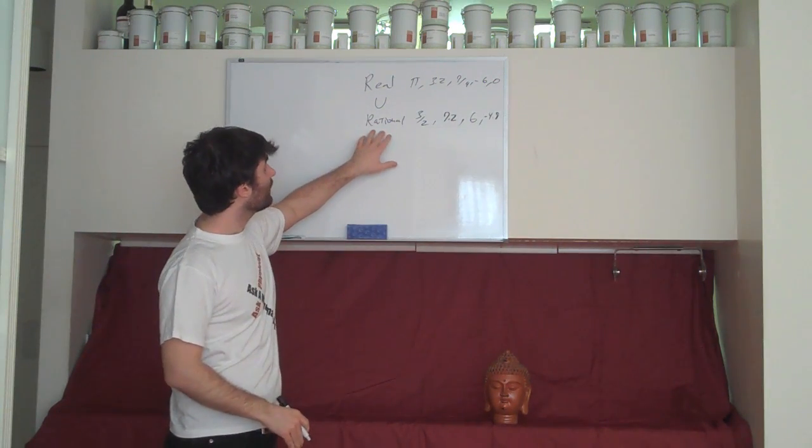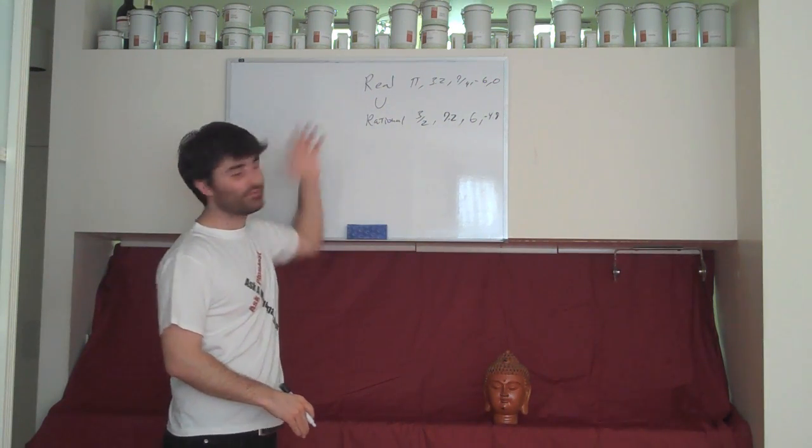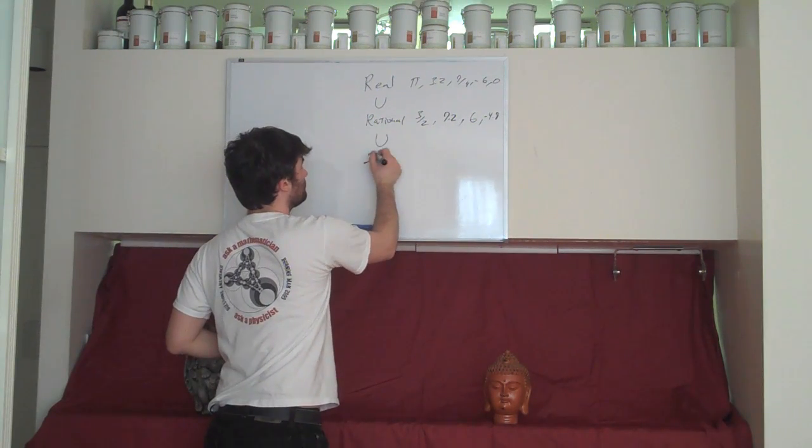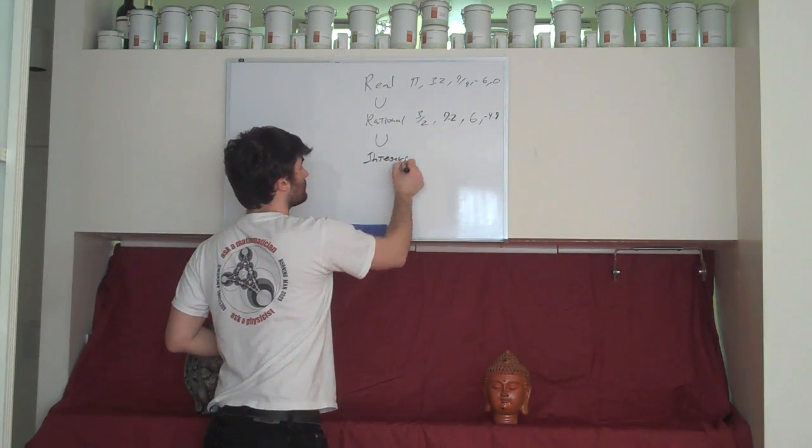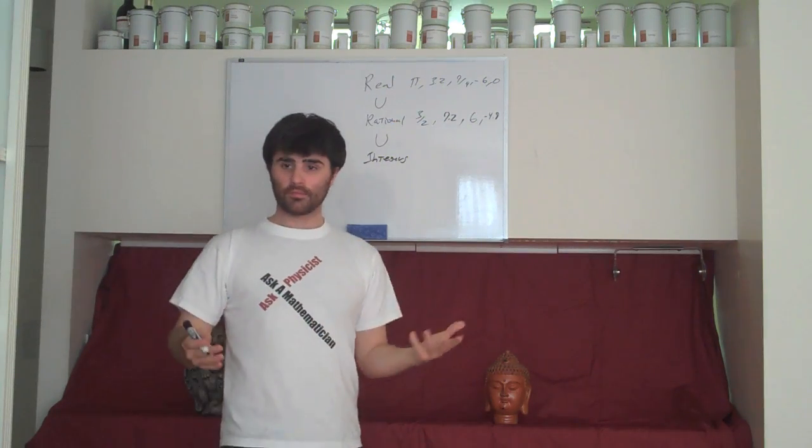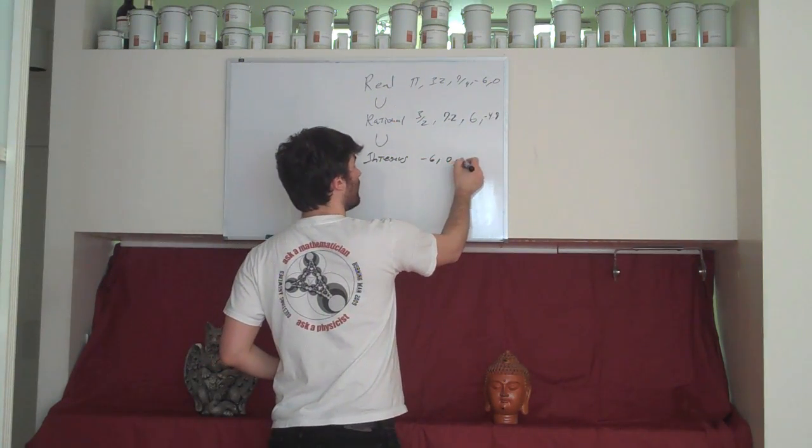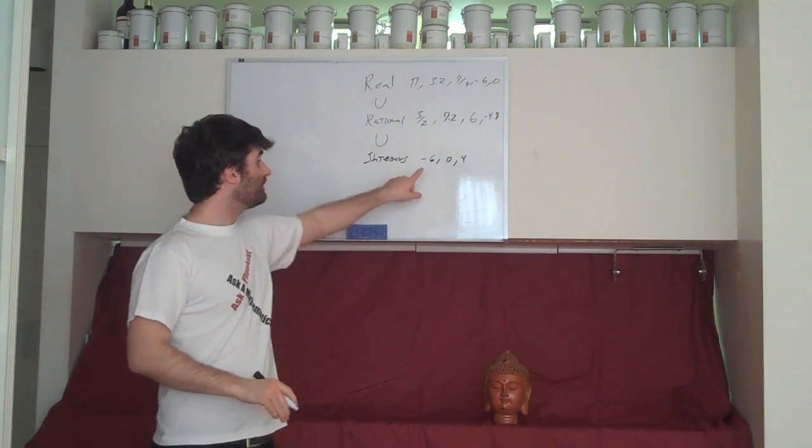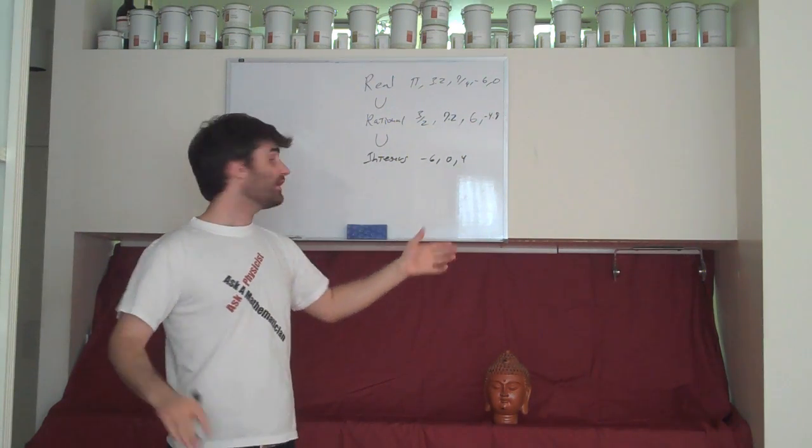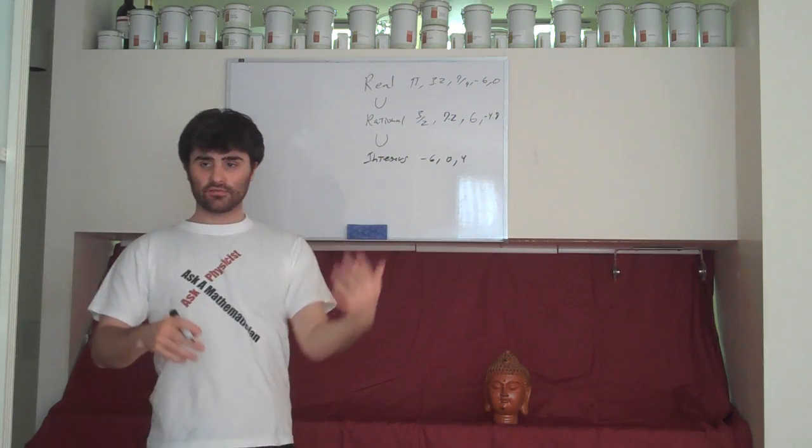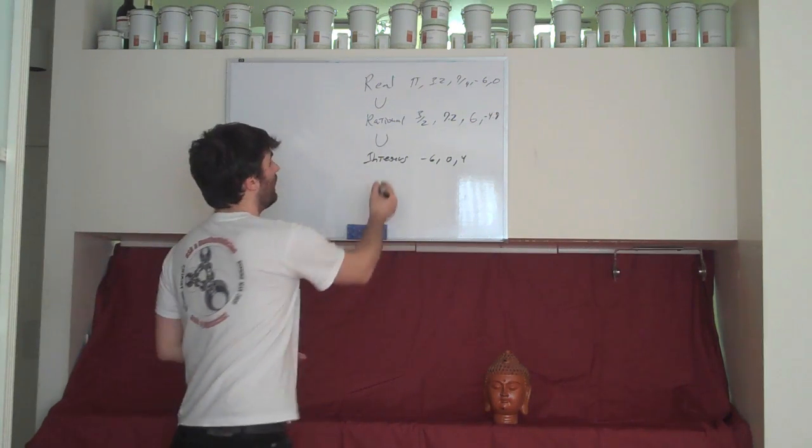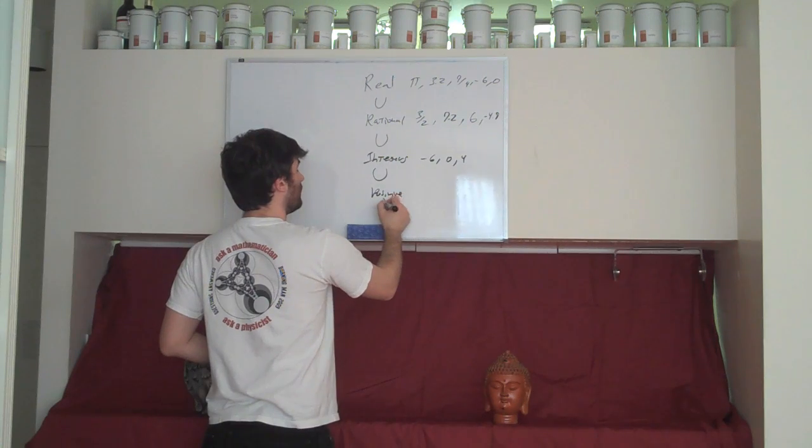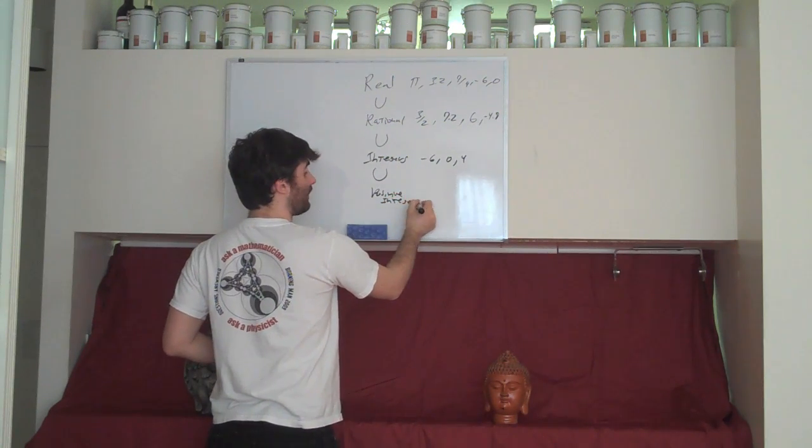So, the rationals are, we say, are actually a subset of the reals. We can introduce another set, which is the integers. And the integers are all whole numbers, both negative and positive. So you have negative 6, and 0, and 4, et cetera. And these are clearly a subset of the rationals, because each of these can be written as a ratio of two integers. Like, negative 6 is the ratio of negative 6 and 1. And then we have, finally, the positive integers. And these are subset of the integers, because these are just the whole numbers that are excluded.